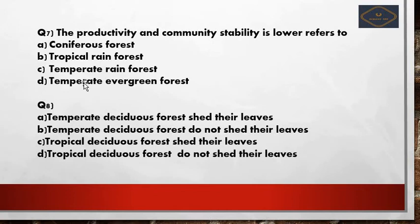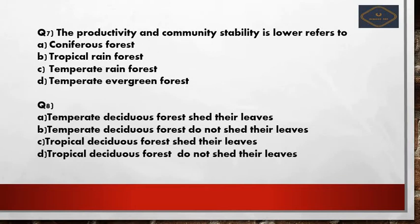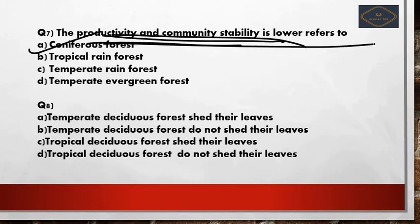Seventh question: productivity and community stability are lower in which forest? Options: coniferous forest, tropical forest, temperate rainforest, temperate evergreen forest. In the other three forests, productivity and community stability are comparatively much higher. Therefore, the correct answer is coniferous forest.